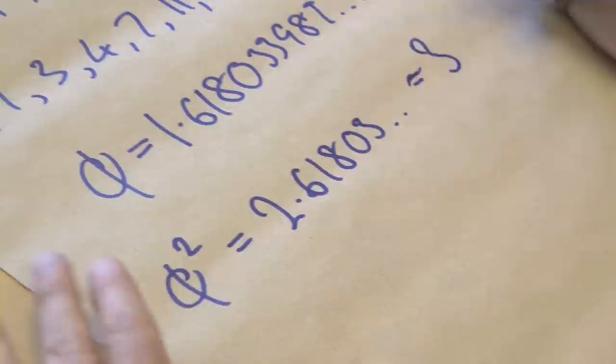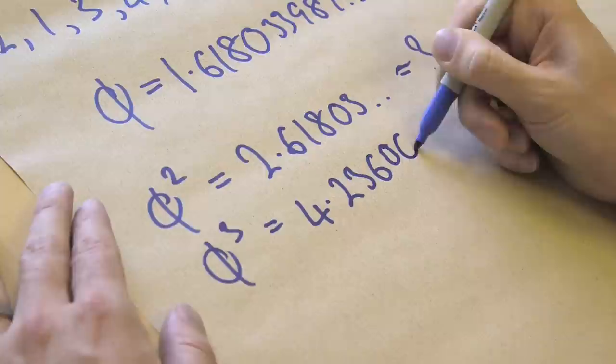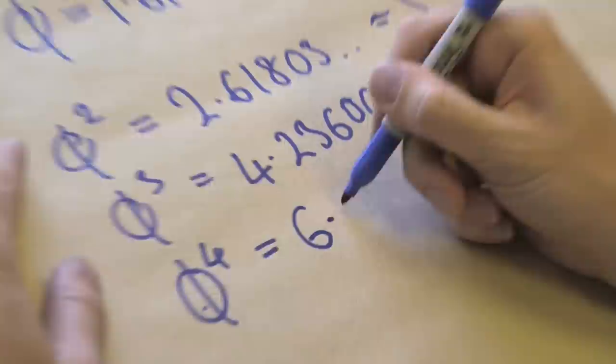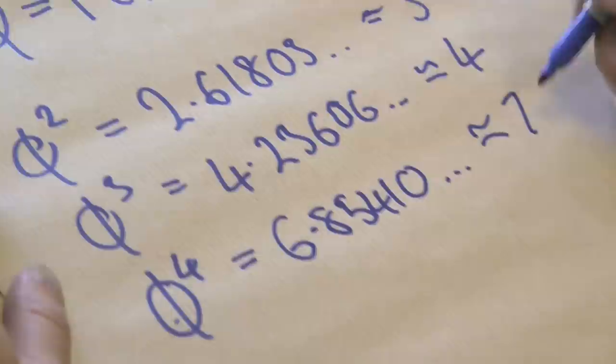So I'm going to do this column as rounding to the nearest whole number. If you do phi cubed, phi cubed equals 4.23606, and so on, which if you round that to the nearest whole number is 4. Phi to the 4 is 6.85410, and so on. Round to the nearest whole number, 7.